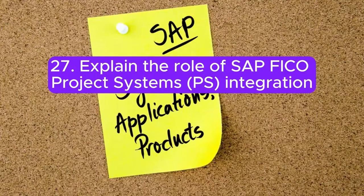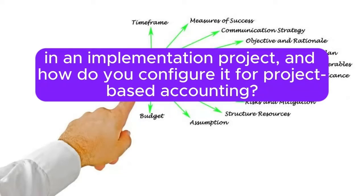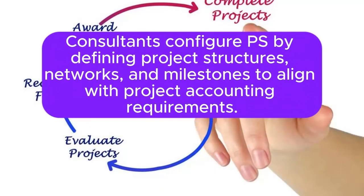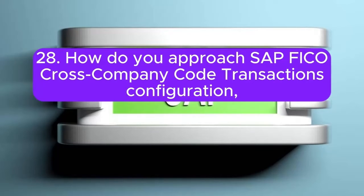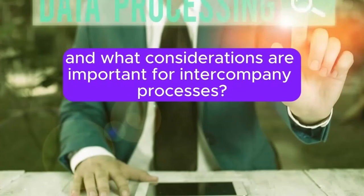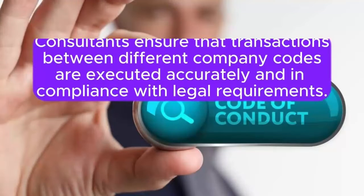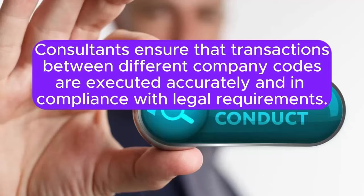Question 27: Explain the role of SAP FICO Project Systems (PS) integration in an implementation project, and how do you configure it for project-based accounting? PS integration enables tracking costs and revenues for projects. Consultants configure PS by defining project structures, networks, and milestones to align with project accounting requirements. Question 28: How do you approach SAP FICO cross-company code transactions configuration, and what considerations are important for intercompany processes? Cross-company code transactions configuration involves defining document types and settings for intercompany transactions. Consultants ensure that transactions between different company codes are executed accurately and in compliance with legal requirements.